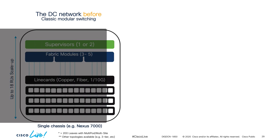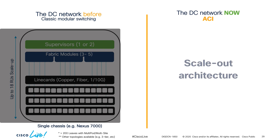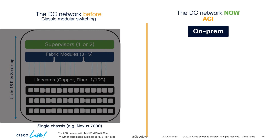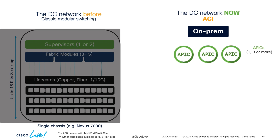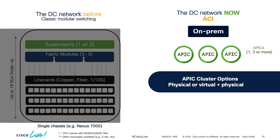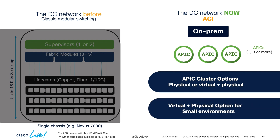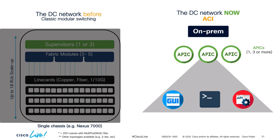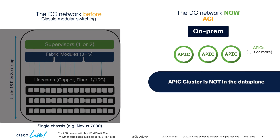Now with ACI, we disaggregated that model and changed to a scale-out architecture which can run on-premises, virtually, or even in the cloud. For the on-premises architecture, we have a single management point for multiple switches, virtual and container networks, called the APIC. APICs are either physical servers or a mixture of physical servers and VMs that serve as the management plane, providing a single central GUI, CLI, and RESTful API. A cluster with a minimum of three APICs is recommended for production environments.